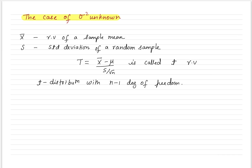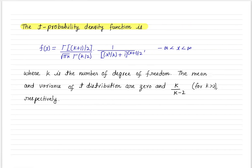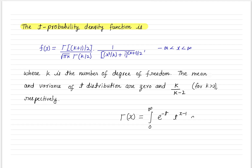For completeness, let me define the t probability density function. The t distribution function is defined with k as the number of degrees of freedom, mean equal to 0, and variance equal to k upon (k minus 2). This function involves the gamma function, which is a generalization of the factorial function, defined as the integral from 0 to infinity of t^(x-1) times e^(-t) dt.